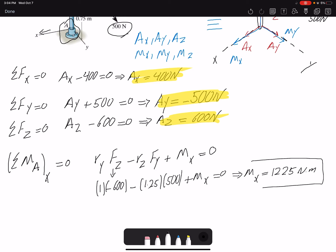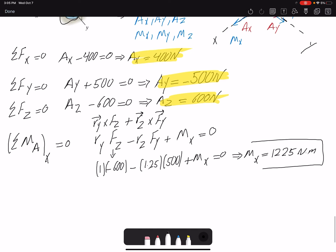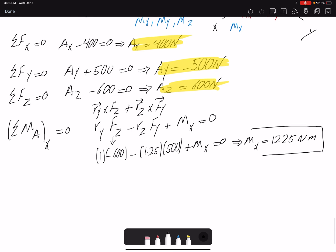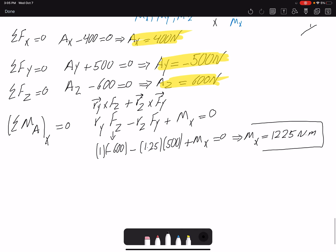If you don't remember the signs, you could just simply write Ry cross Fz plus Rz cross Fy. And if you write it in cross format, then these cross products will take care of the sign. If you have K and J components, the sign will appear when you are cross-producing K component with J component.